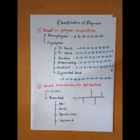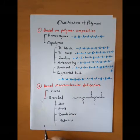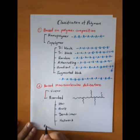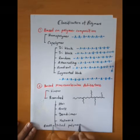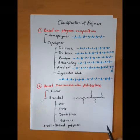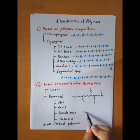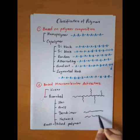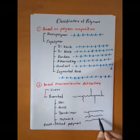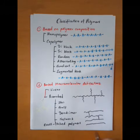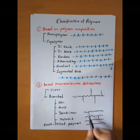Apart from linear and branched polymers, there is another type called cross-linked polymers. In cross-linked polymers, we have a network of linear polymers connected by cross-links. A very good example of a cross-linked polymer is vulcanized rubber, which has cross-linked sulfur-sulfur bonds.